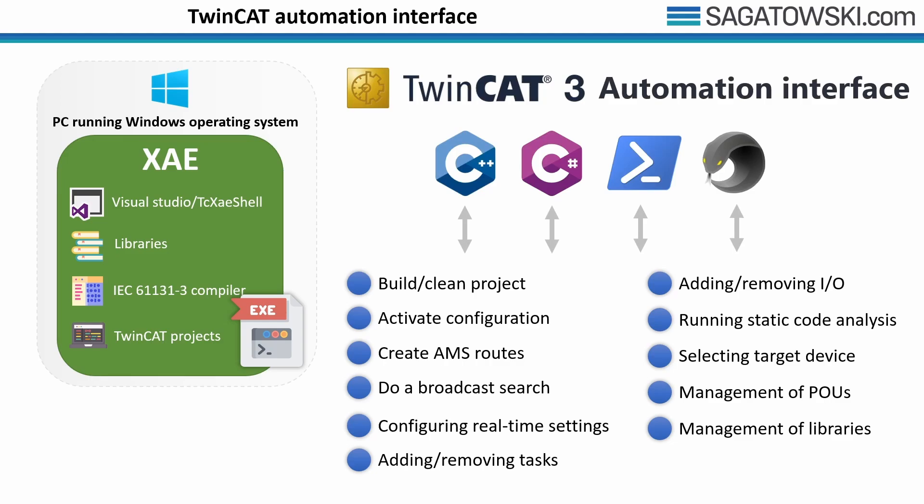With the TwinCAT automation interface it's possible to automate most of the things you do manually in TwinCAT. It provides bindings for various programming languages so that you can automate the automation in different languages — bindings for programming languages such as C++ and C#, but also for scripting languages such as PowerShell and IronPython.